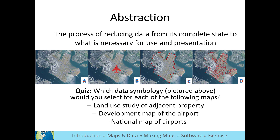Feel free to pause the video after each of the following questions if you need more time to examine the pictures and think of an answer. Which data symbology would you select if you wanted to do a land use study of properties adjacent to the airport? Most likely you would choose C, because it shows the border and you can easily see what is adjacent. Example D also shows the airport border, but it includes runway information, which you do not need.